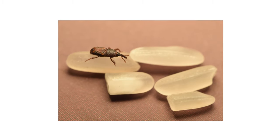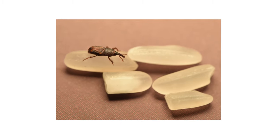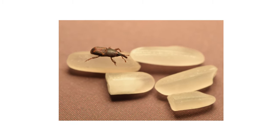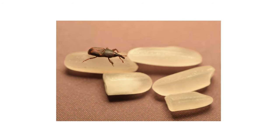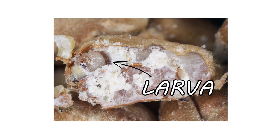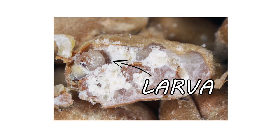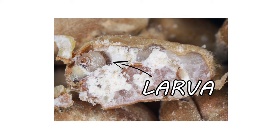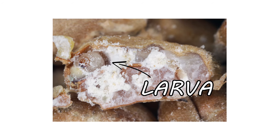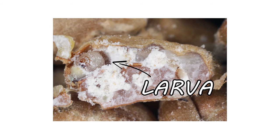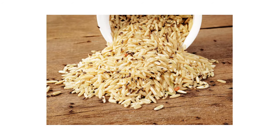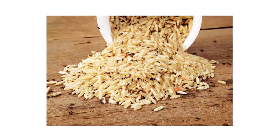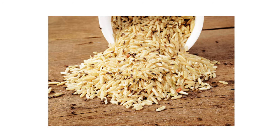After mating, a female weevil will deposit one egg into one grain, seal up whatever holes she's made, and then move on to the next grain. She'll repeat this process until she has laid about 300 to 400 eggs. Though only half of all rice weevil eggs hatch, this is how a large scale infestation can easily occur.